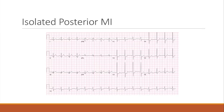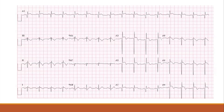This is actually an isolated posterior MI. The reason this looks funny is because all of our EKG leads are on the front of the chest, and when the back side of the heart is infarcted, if you had EKG leads on the back — which we do sometimes — you would see ST elevation. But because you're viewing that ST elevation from the front, it looks like ST depression. What I'm going to do is flip it over and pretend like you're holding it up to the light and looking through it from the back. Watch how much more it jumps out at you. It's just part of your pattern recognition — your brain sees ST elevation easier than ST depression.